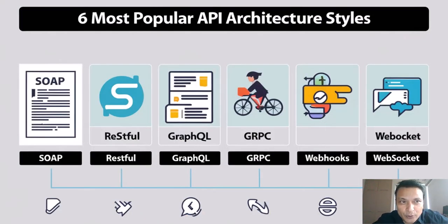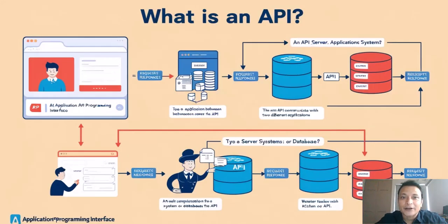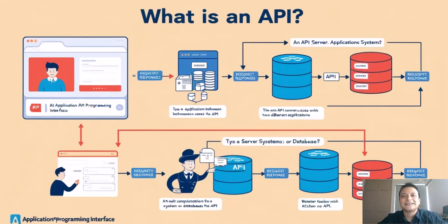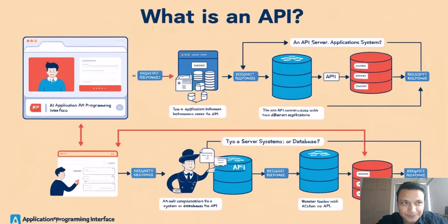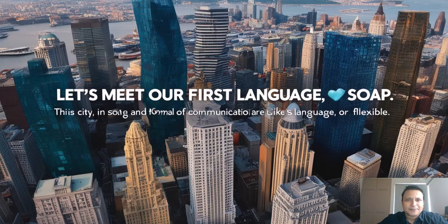For those who don't know what an API is, here's a quick overview. API stands for Application Programming Interface. It's a set of rules and tools that allow different software applications to communicate with each other. API defines the methods and data structures that developers can use to interact with a service, application, or another system, enabling them to build software more effectively.